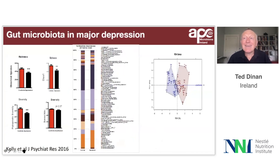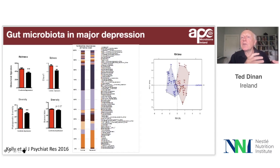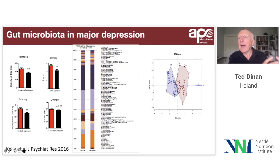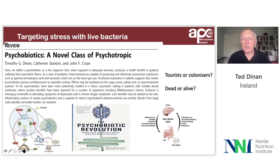We know that in depression — and there's no reason to assume a depressed child is different from a depressed adult — the gut microbiota loses diversity; it's not as diverse as it would be in a healthy individual not suffering from depression. We've just finished a study looking at individuals in their late teens and early 20s, and we find similar findings in those with social anxiety disorder.